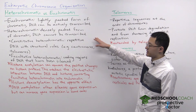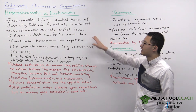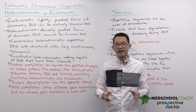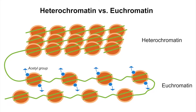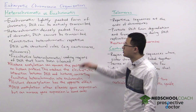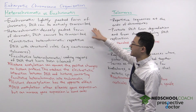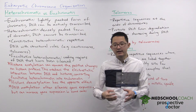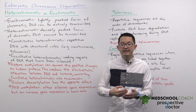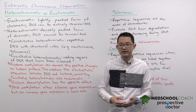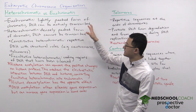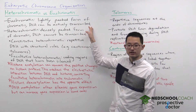The easiest way to understand the difference between euchromatin and heterochromatin is by looking at this diagram. The main difference between the two is how densely packed the chromatin fibers are. In euchromatin, the chromatin fibers are lightly packed, so the DNA is accessible by RNA polymerase and can be actively transcribed.